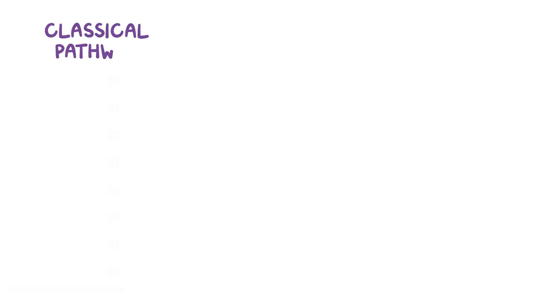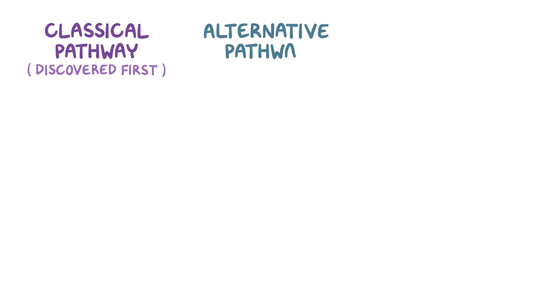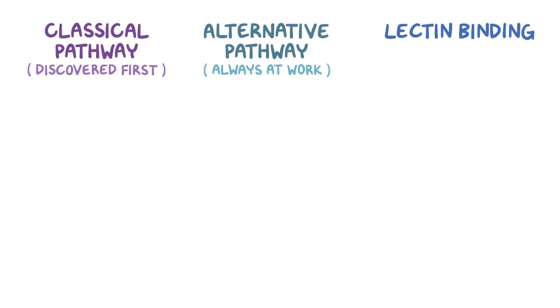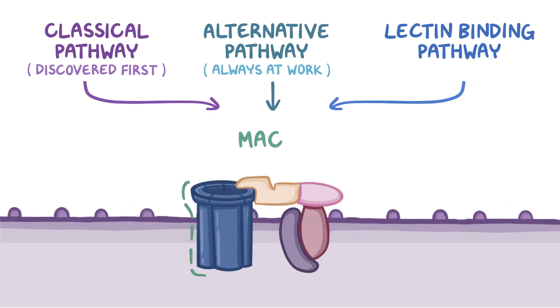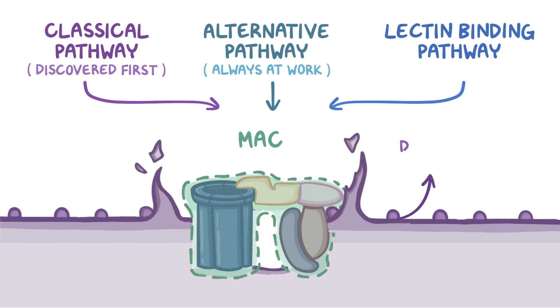There are actually three complement pathways: the classical pathway, called that because it was discovered first; the alternative pathway, which was found second and is always at work; and the lectin binding pathway, which was found third. All three pathways start out a bit differently, but they all end the same way with a membrane attack complex — a protein complex that creates a hole in a bacterial cell membrane, effectively destroying mainly gram-negative bacteria.